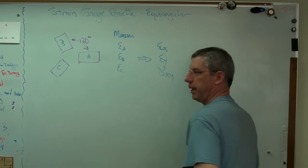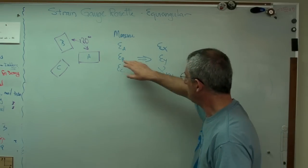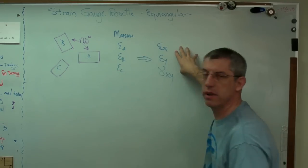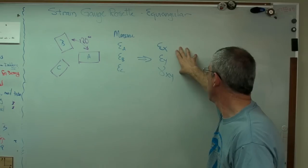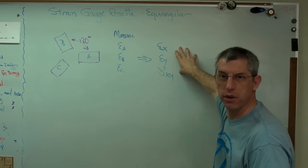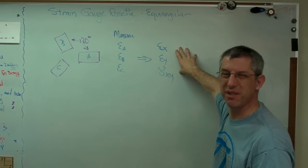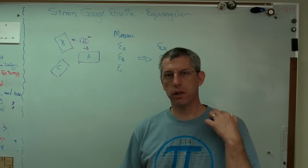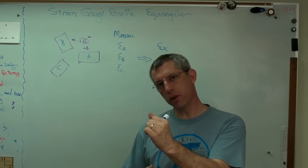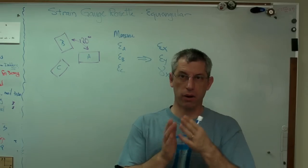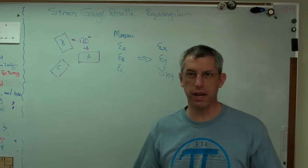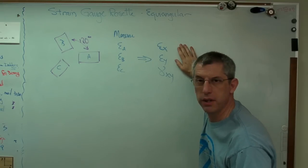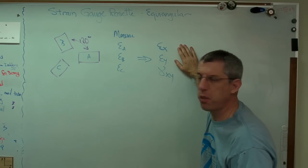Well we don't necessarily want to know those, we want to know epsilon X, epsilon Y, and gamma XY. Why is that? Well we don't pick these angles usually to analyze with, we pick coordinate systems that are convenient. We tend to do things like put axes along planes of symmetry. I used to work in aerospace, so most of the time the positive X direction went in the flow direction.